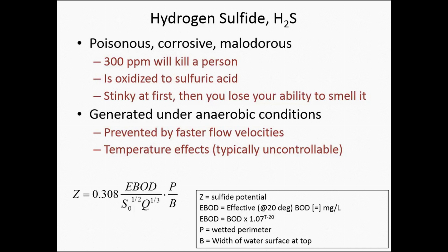This is an empirical equation that allows you to estimate how much BOD potential there might be — how much potential for generating hydrogen sulfide — based on the concentration of waste in the water and some hydraulic parameters like the flow rate, the slope of the channel, and the wetted perimeter to the top width. According to this empirical model, if you calculate a Z value less than 5,000, then hydrogen sulfide probably won't be formed. At 10,000 it probably will be formed, and there's a middle ground where it's possible and you have to be looking out for it.